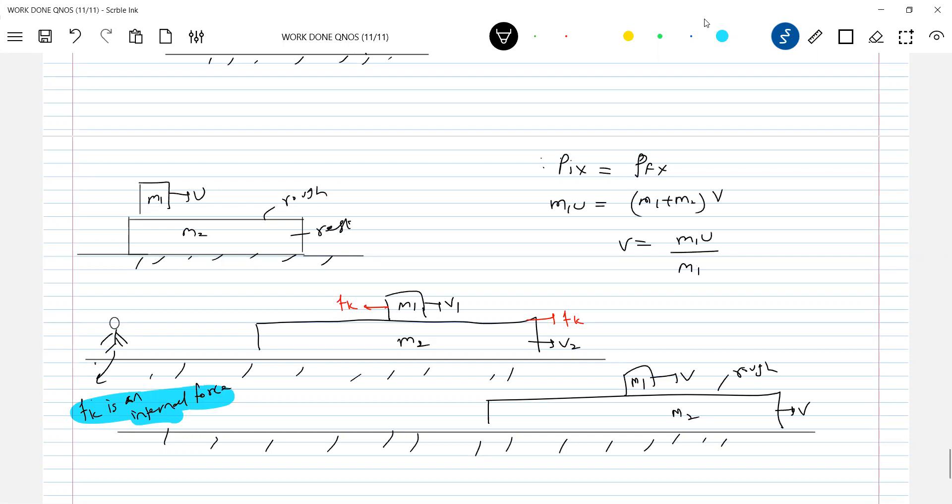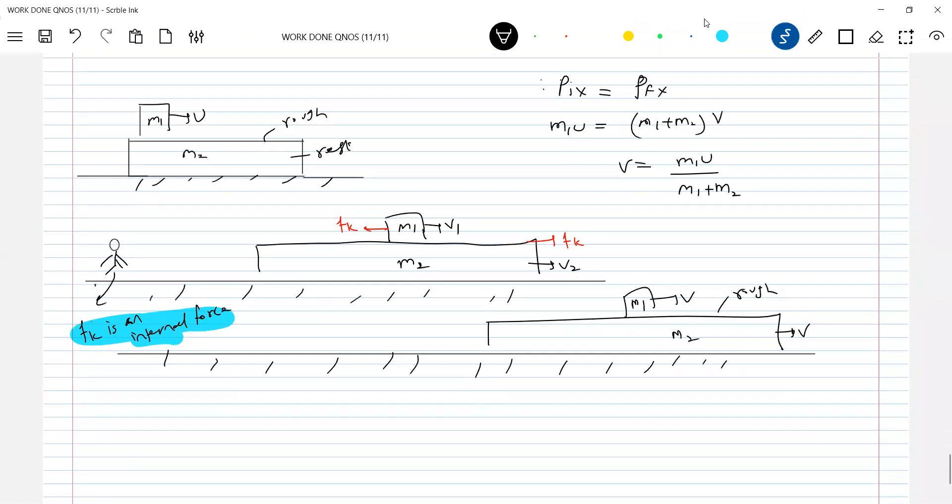So what is the velocity? Finally, M1 plus M2. Let's calculate the kinetic energy of this. Initial kinetic energy: M1 U square by 2. Final kinetic energy: M1 V square by 2, M2 V square by 2.